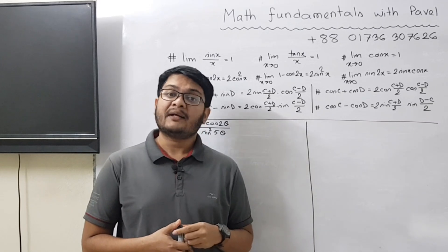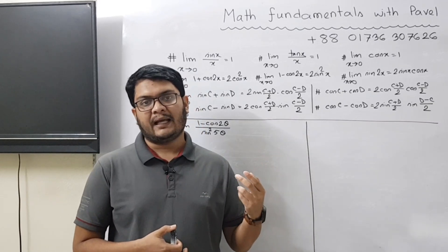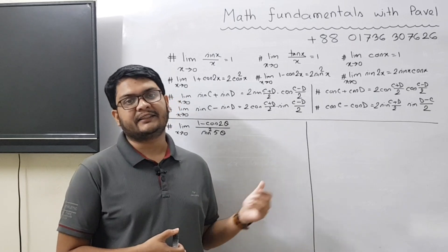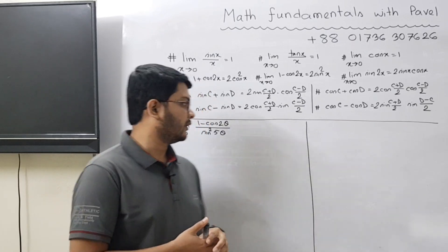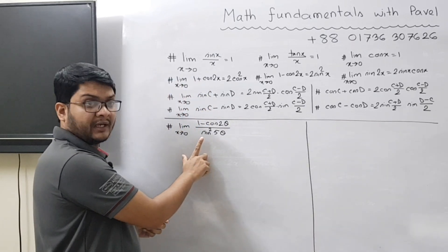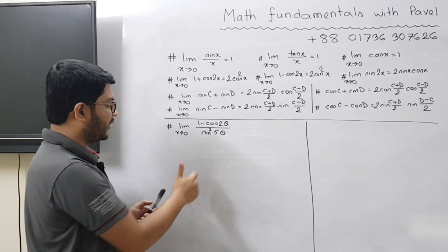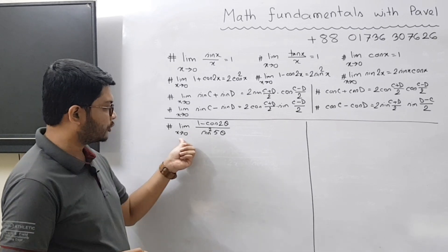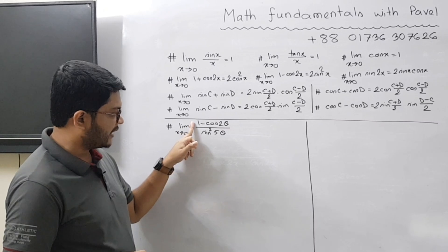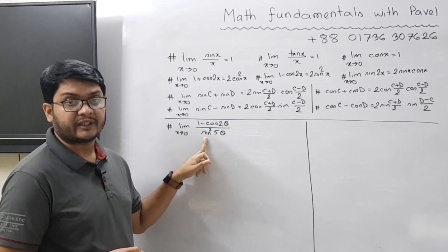I'd like to request all of you to watch those two lectures, as that will help you understand this lecture very easily. So let's start. The first problem, as you can see written on the board, is: limit x tends to 0 of 1 minus cos 2 theta divided by sin square 5 theta.